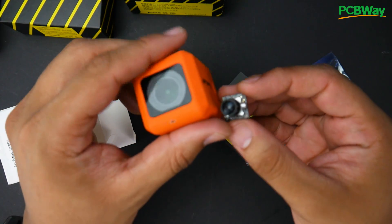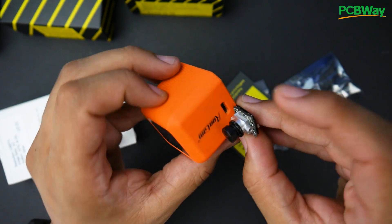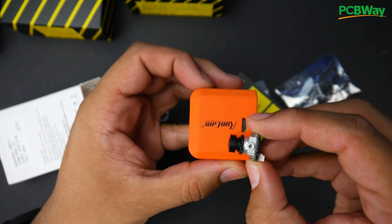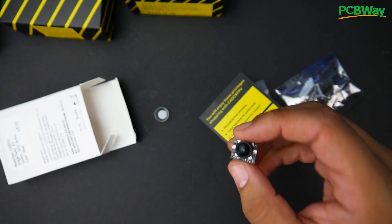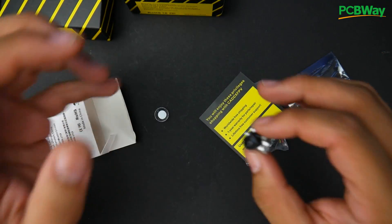So for example, here's a RunCam, a RunCam Split. You can see how tiny this thing is, not even a quarter. So this thing is really, really tiny and that's its main selling point here.